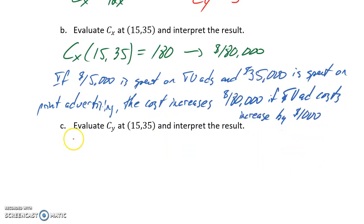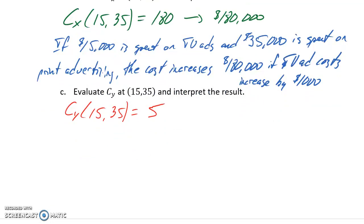We can also evaluate C sub Y, the partial derivative with respect to Y at (15, 35), which in this case would still just be 5, regardless of expenditures in each area. The partial derivative will always equal 5.